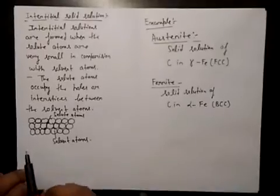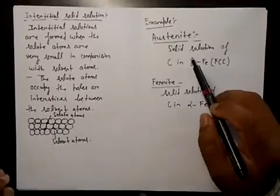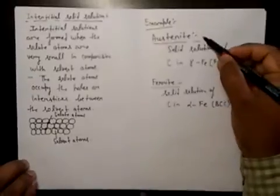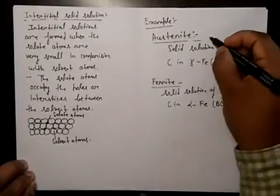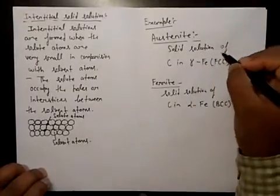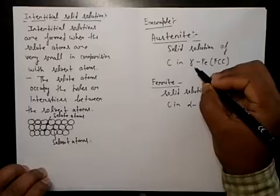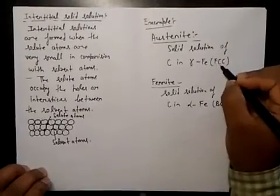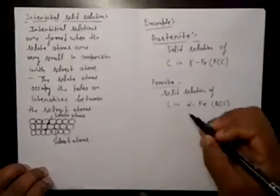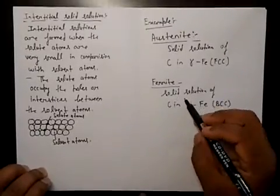If we talk about the examples, its examples are austenite and ferrite. Austenite is solid solution of carbon in gamma iron, which means FCC structure.